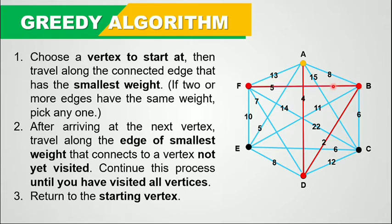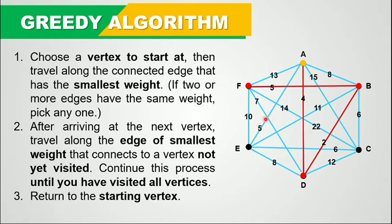Next, we will find another edge connecting to F which is the smallest. The edges have weights 13, 5 (already traveled), 14, 7, and 10. Supposedly 5 is the smallest, but we have already traveled to that one. And 7 is next, but we have already visited that vertex — so if we connect to it, it would not be a Hamiltonian circuit because we have not visited all other vertices yet. So we will travel to F to E, because this vertex is not yet visited.